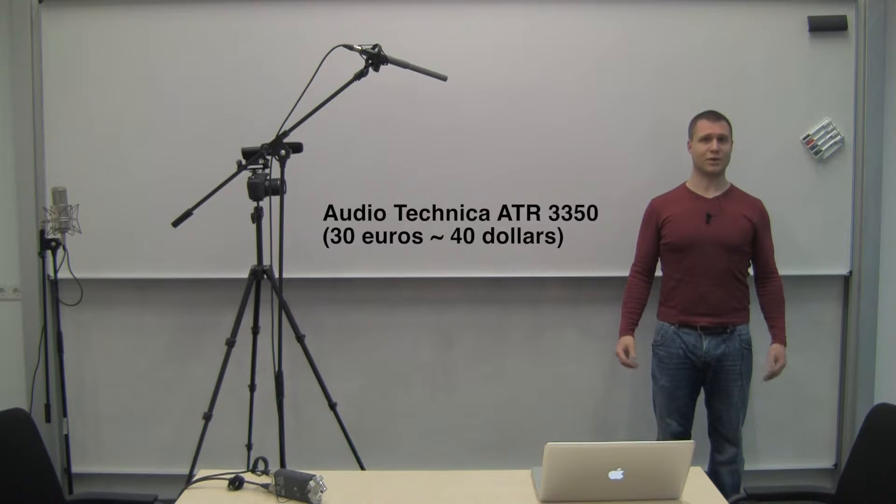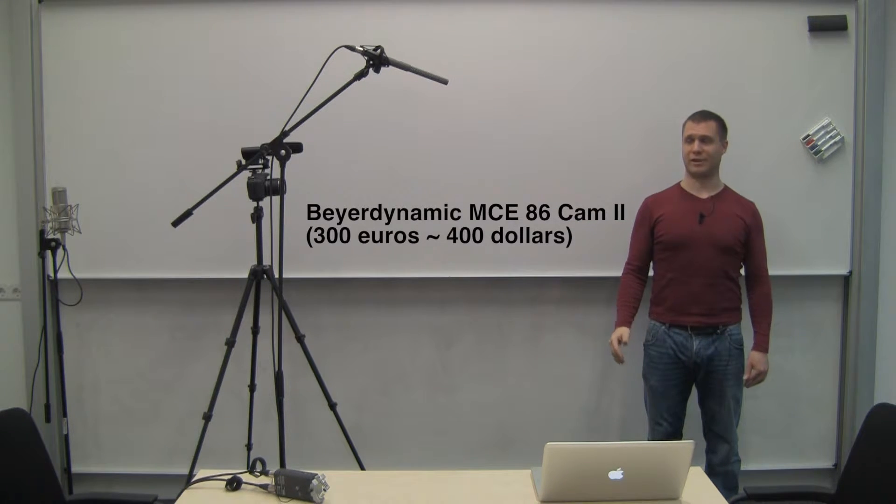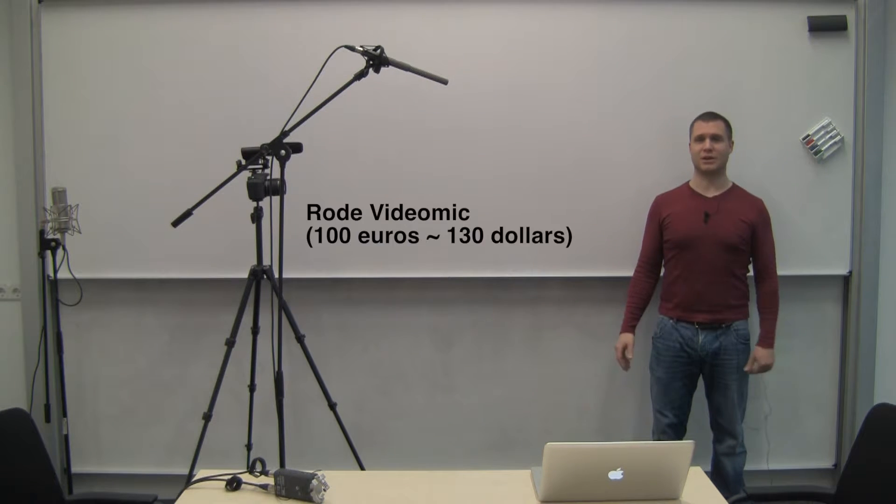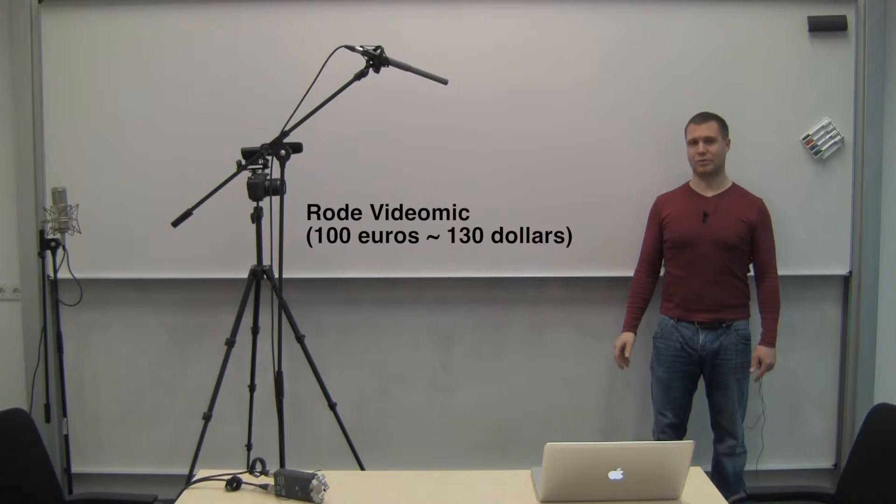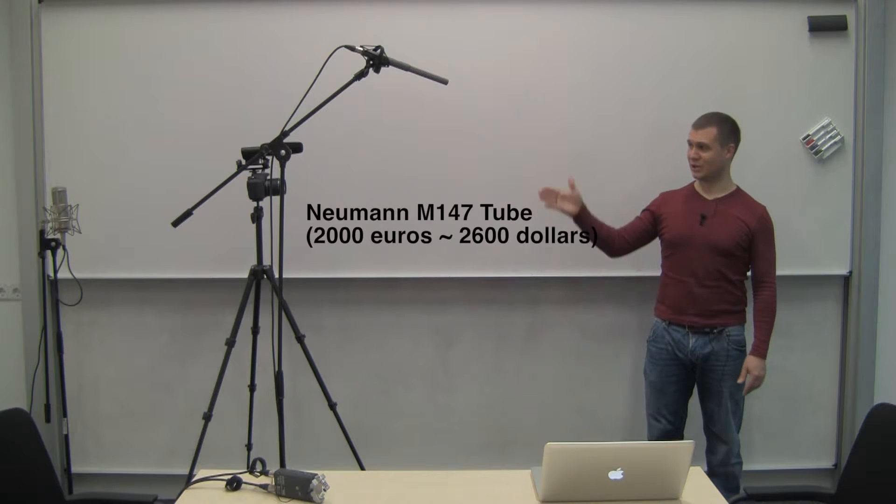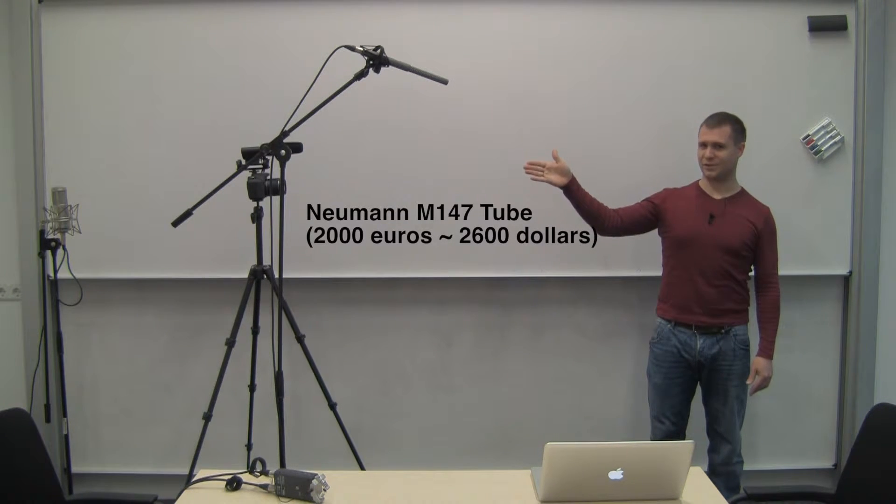This is me recording into a 30 euro condenser lavalier mic attached to my shirt. This is me recording into a 300 euro shotgun mic, about 1.5 meters or 5 feet away from my mouth. This is me recording into the 100 euro road video mic, about 2 meters or 7 feet away from my mouth. This is me recording into a 2,000 euro studio mic, about 3 meters or 10 feet away from my mouth.